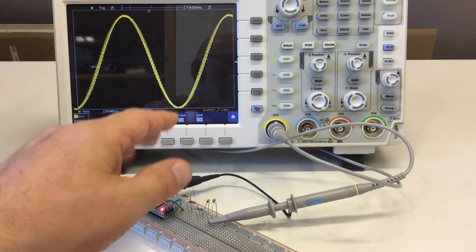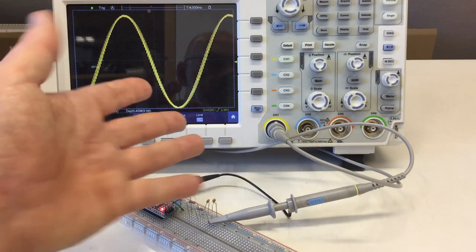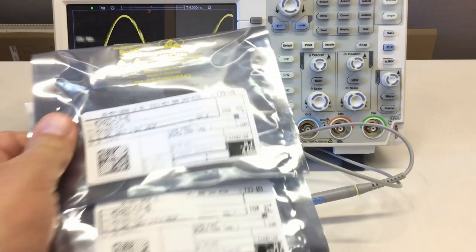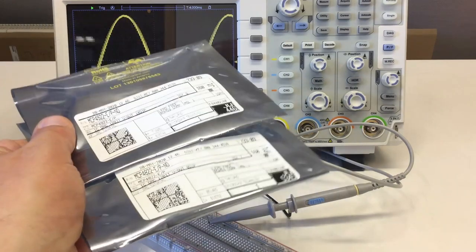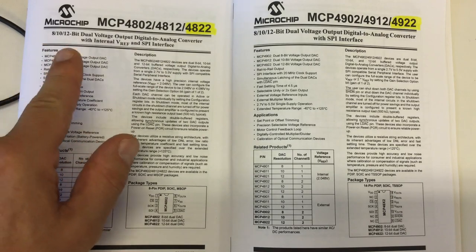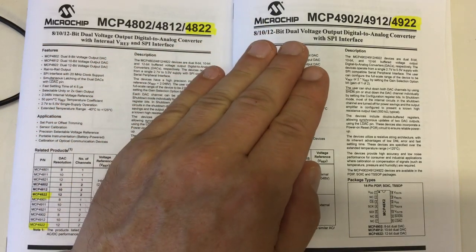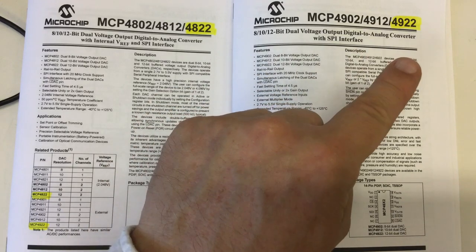And that would be digital analog converters. As it happens, I have two brand new digital analog converters here. That would be a Microchip MCP4822 and an MCP4922.